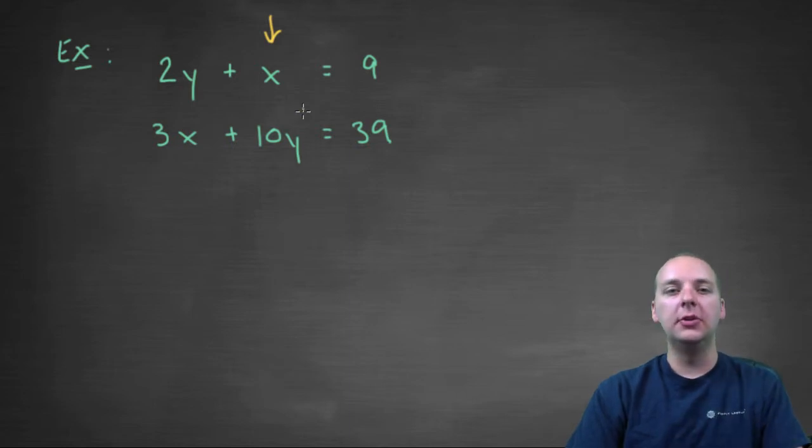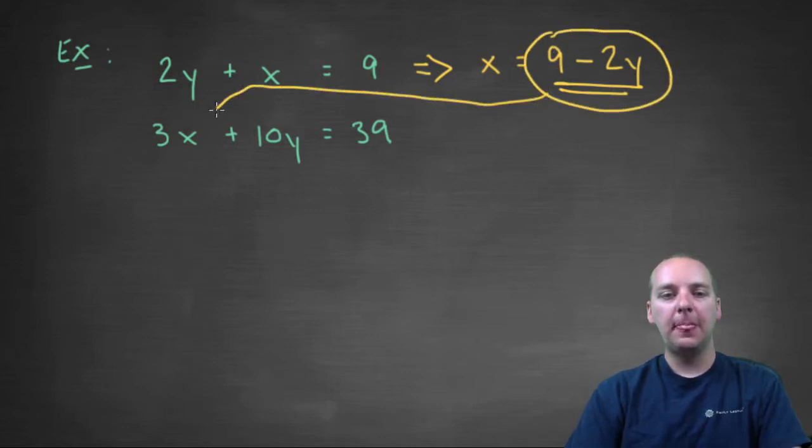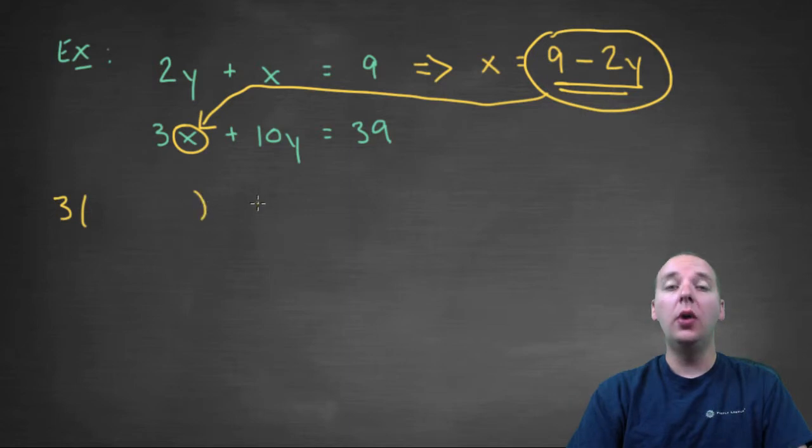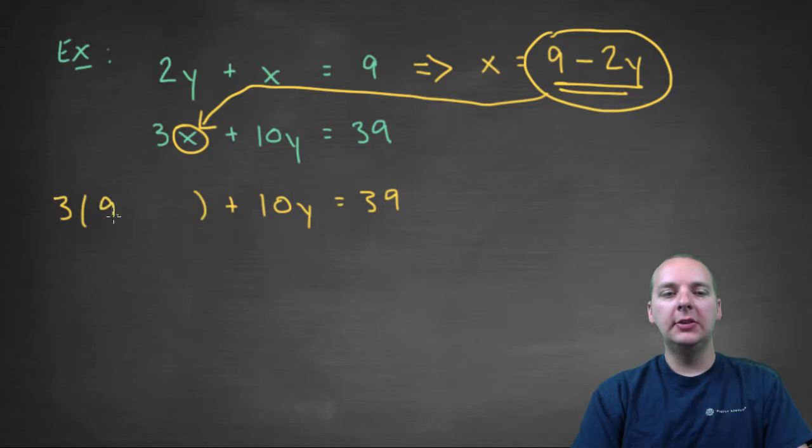So what we'll do is we'll solve for that x, so in this case x is equal to 9 - 2y. I'm going to subtract the 2y to the right. And so this is what x is, x is 9 - 2y. So I'm going to take that expression and plug it in for this x right here. And what that will give me is one equation with one variable, instead of two equations with two variables. So we had 3x + 10y = 39, but I'm going to take out the x, I usually put blank parentheses, I'd recommend you do the same. And then insert 9 - 2y. So if I can solve this equation for y, then I'll be halfway done with the exercise.